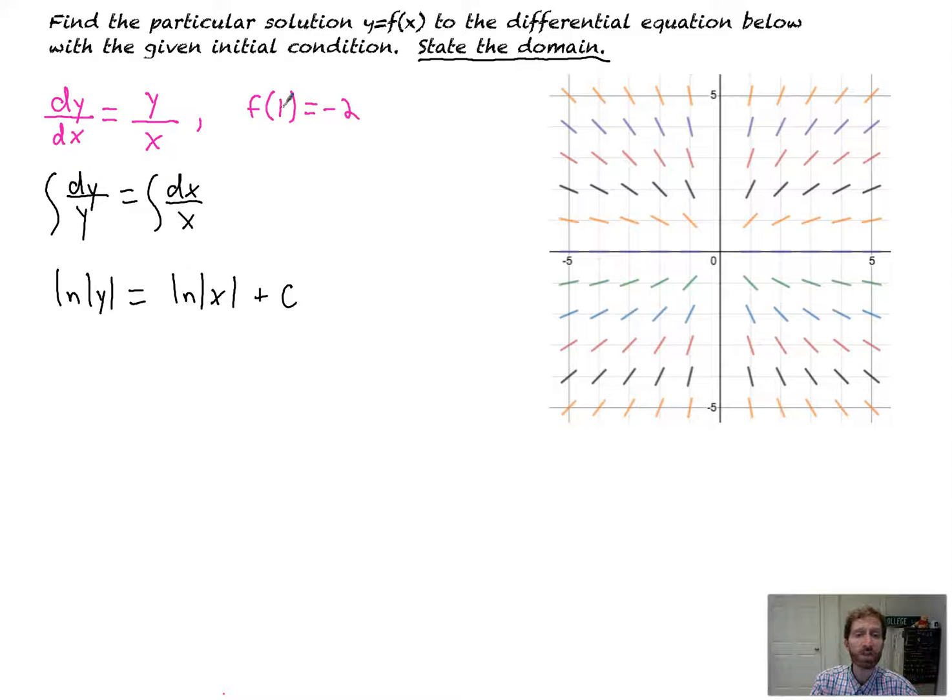Now at this point you can plug in your values to solve, but not what I'm a fan of at this point. I'm going to exponentiate both sides to get y alone, because that's our goal. That undoes the ln. That gives me the absolute value of y equals the absolute value of x times c.